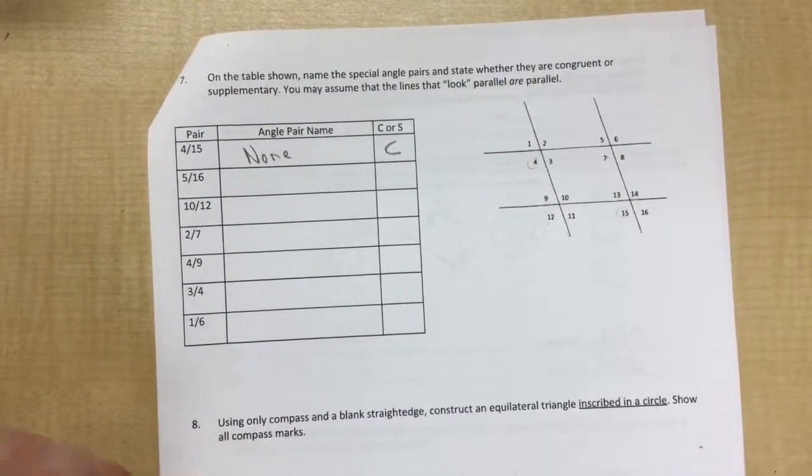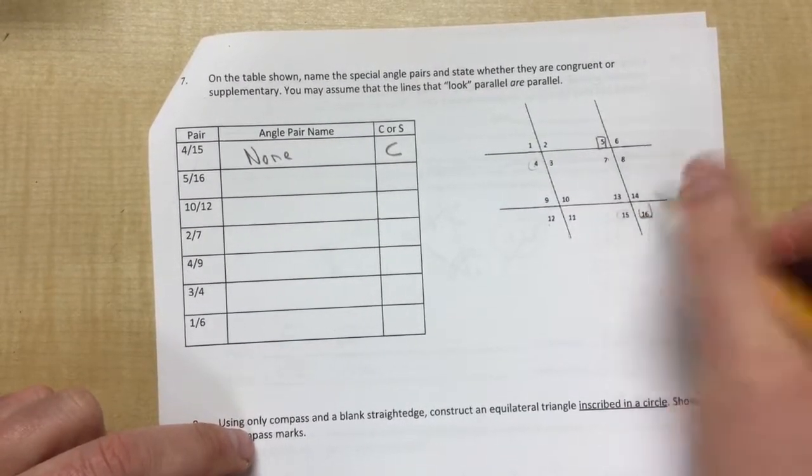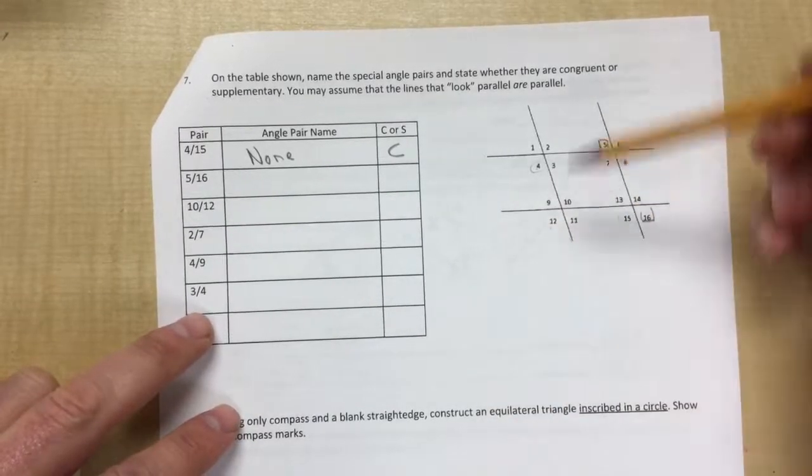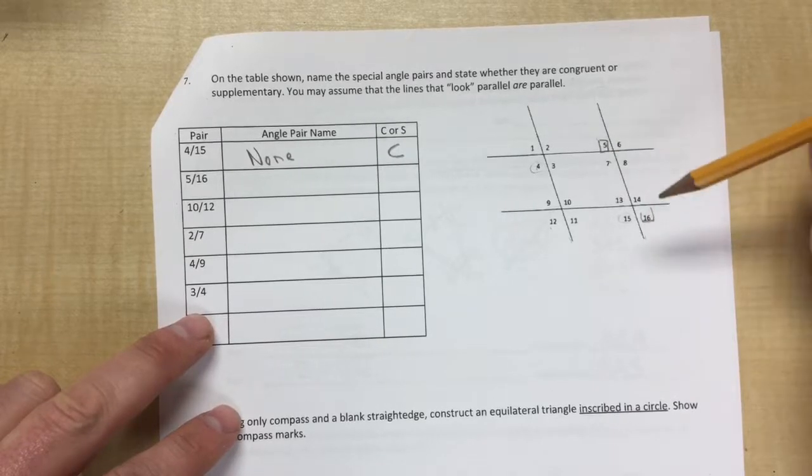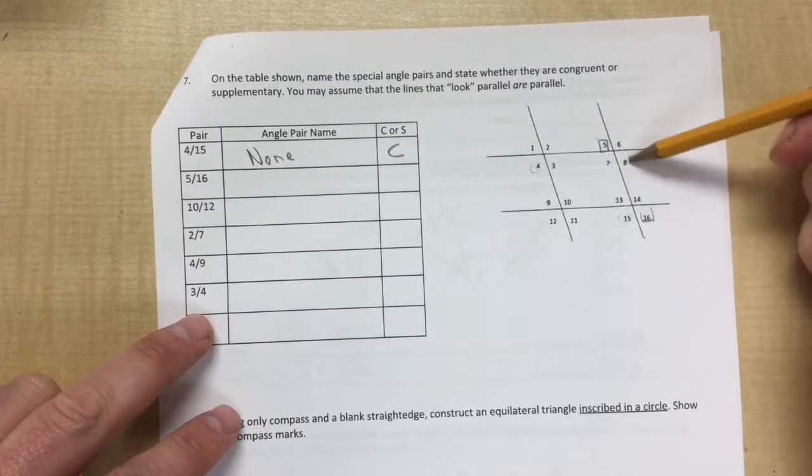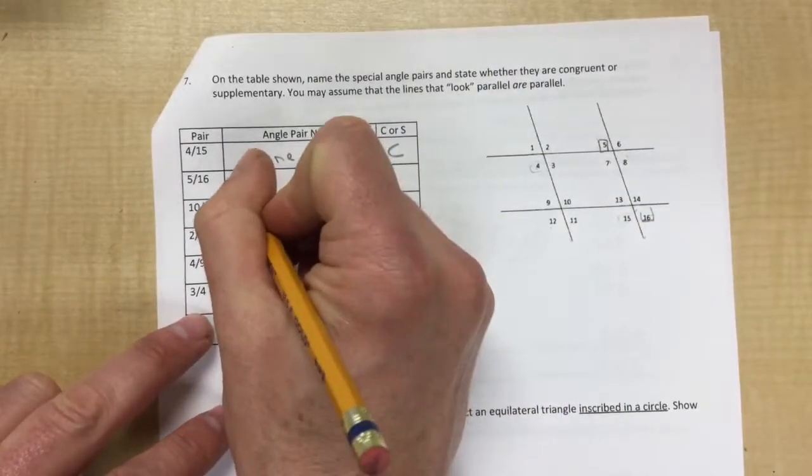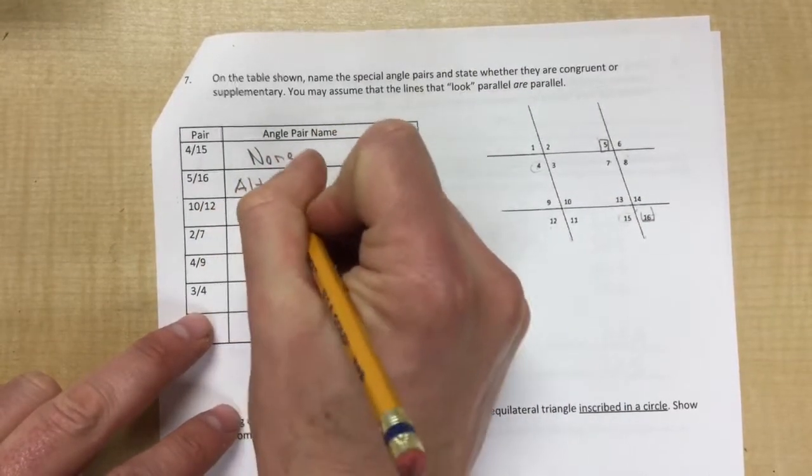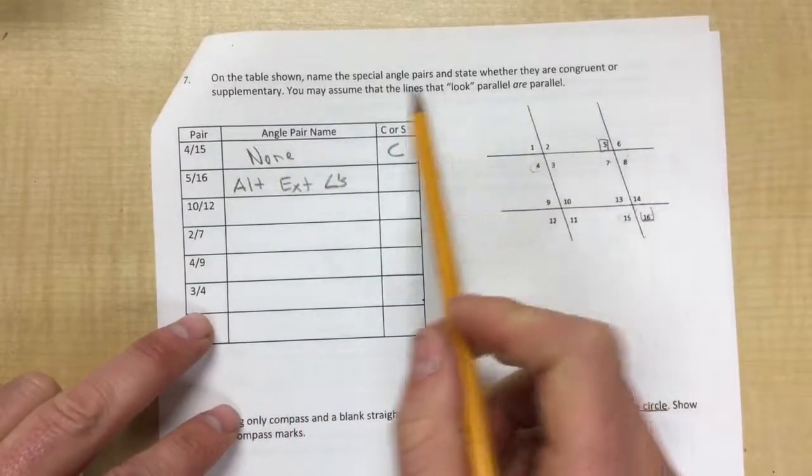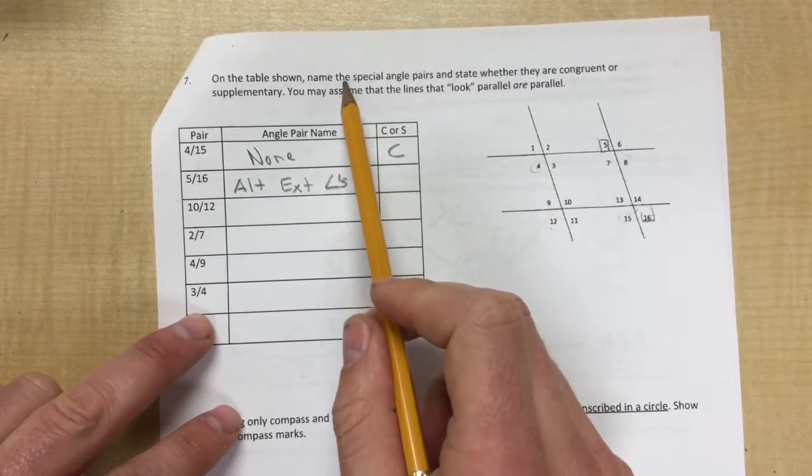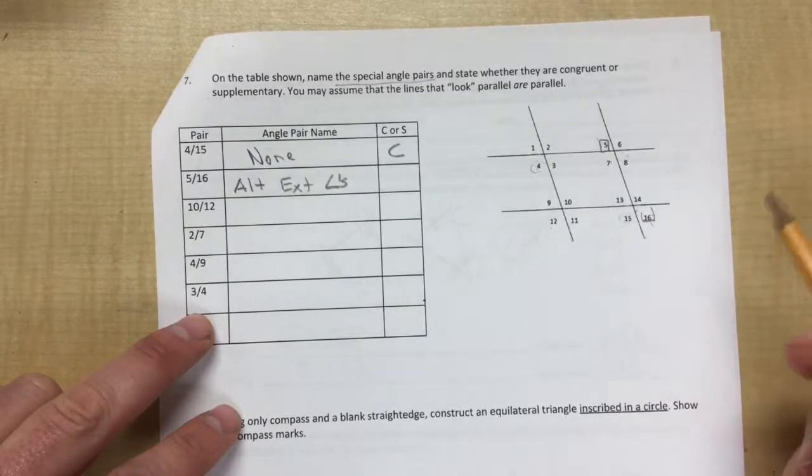Okay, five and 16. So five and 16. Here's five and here is 16. I got my parallel lines and I got this transversal cruising through here. We can see that these are on the exterior of the parallel lines, on the outside, and they're on opposite sides. So those are alternate exterior angles. And if you don't have these memorized, you can research it online. There's great videos on Khan Academy about special angle pairs. But they are on the opposite side and they're on the outside.